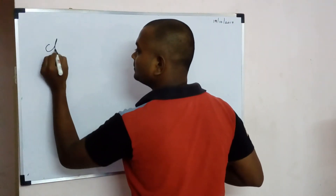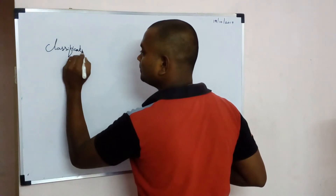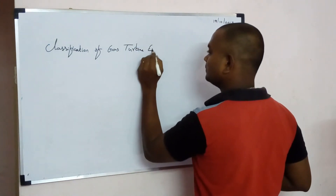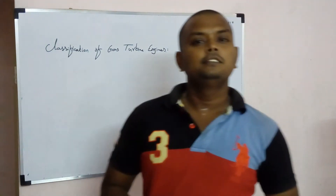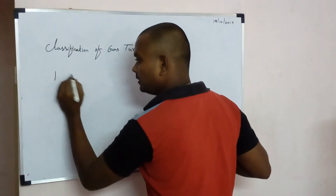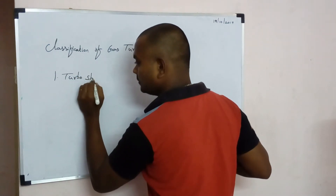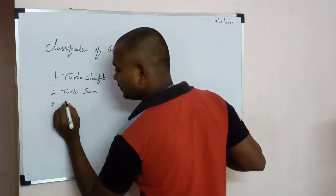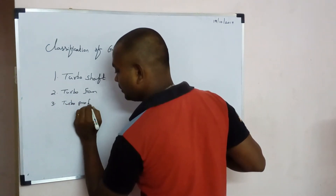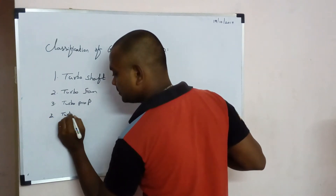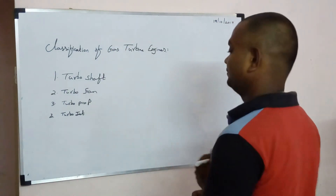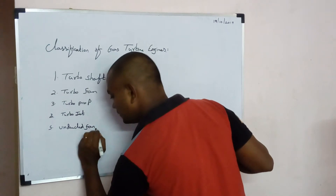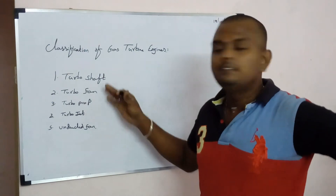Gas turbine engines are generally classified under the following categories: turbo shaft, turbo fan, turbo prop, turbo jet, and unducted fan. These are the major classifications of gas turbine engines.